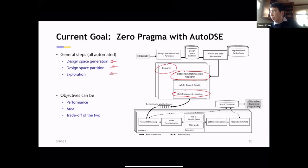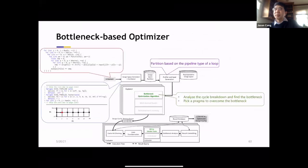So we are building an automatic search engine with some AI capabilities on top of that to do the design space exploration. So what I have is that we have an explorer, which has a number of heuristics. One is based on bottleneck-based optimization. Some of them using reinforcement learning. The objective can be performance, area, and the trade-off of both.